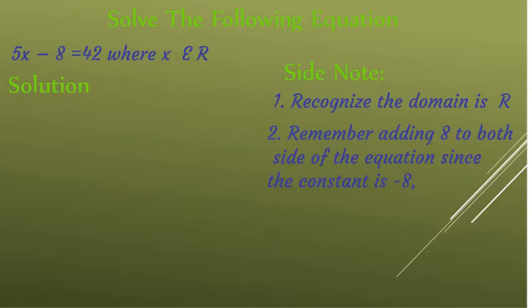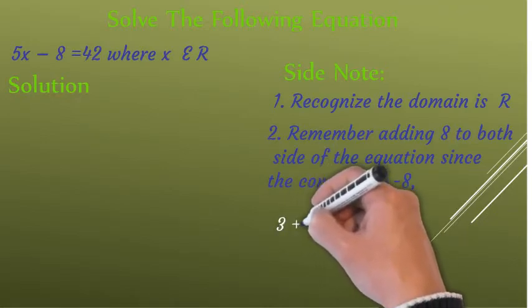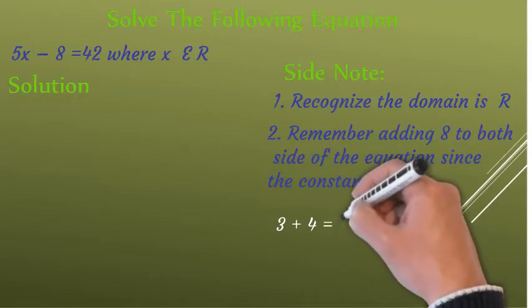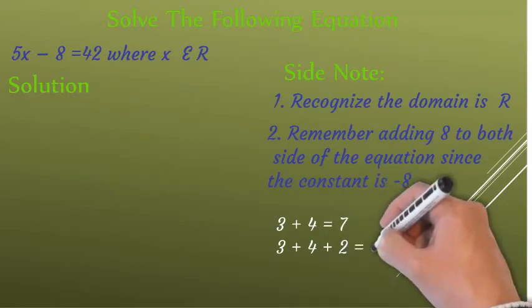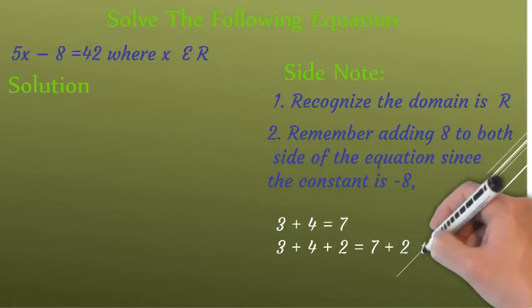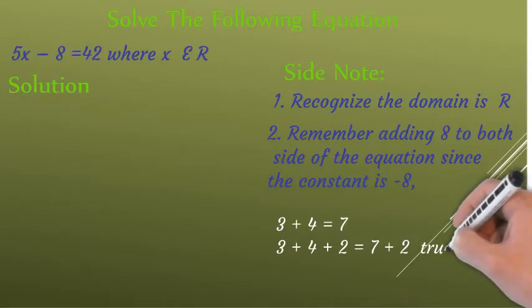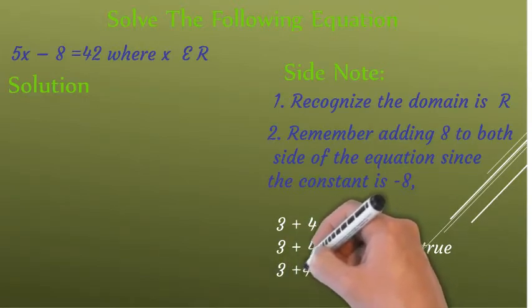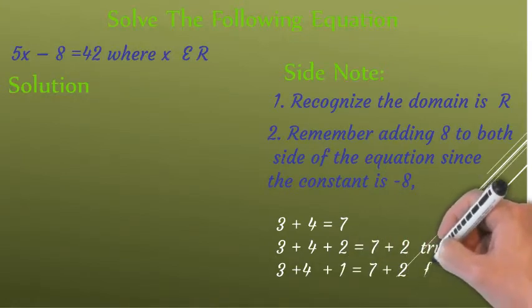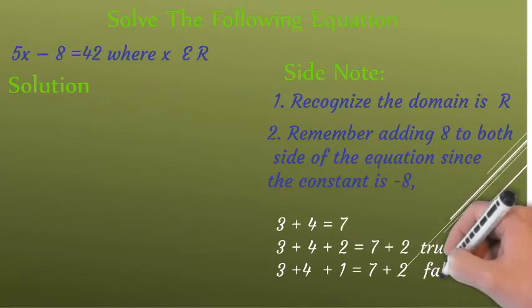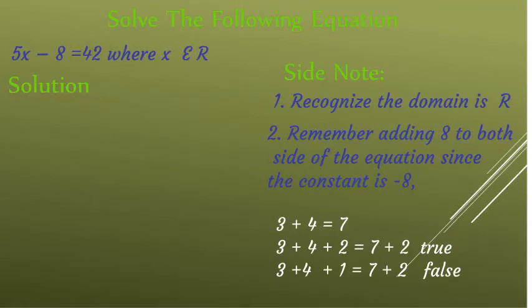If we add the same number on both sides of the equation, the equation will always be true. The result might be different, but it's still going to be true. For example, 3 plus 4 plus 2 is 9, which is the same as 7 plus 2 — the statement still continues to be true. But if we add one on one side and two on the other, the statement becomes false. That means to keep the statement true, we have to add the same number to both sides of the equation. That's the key point here.